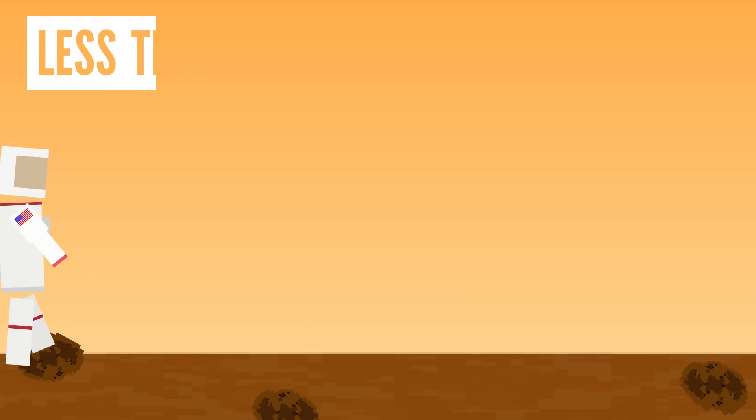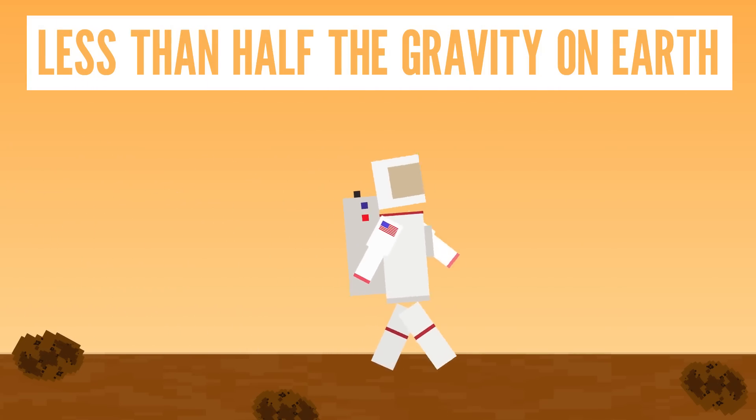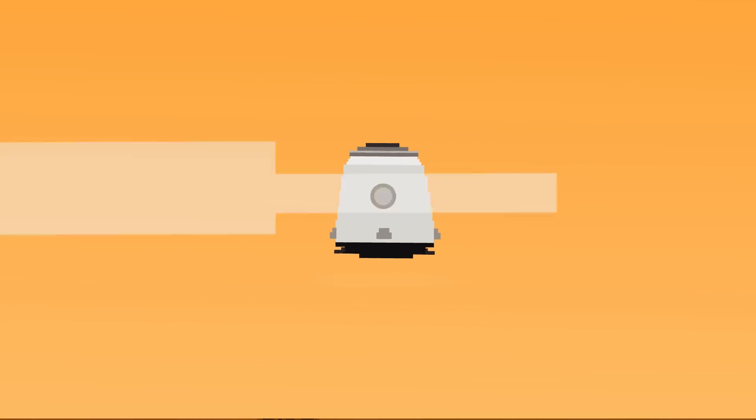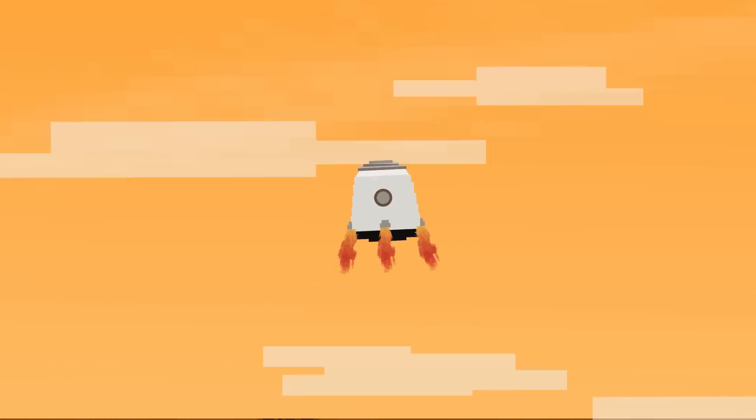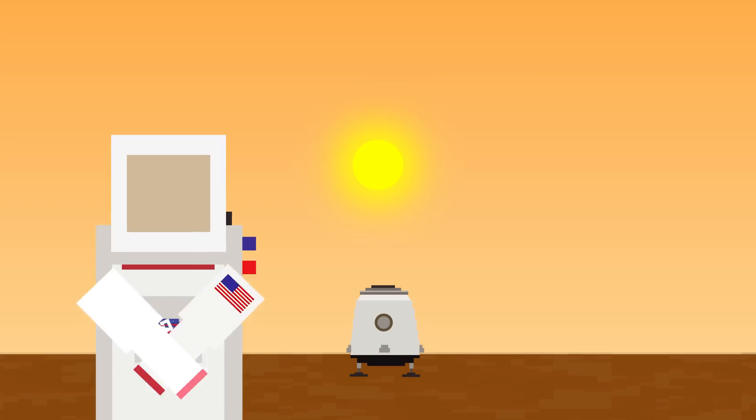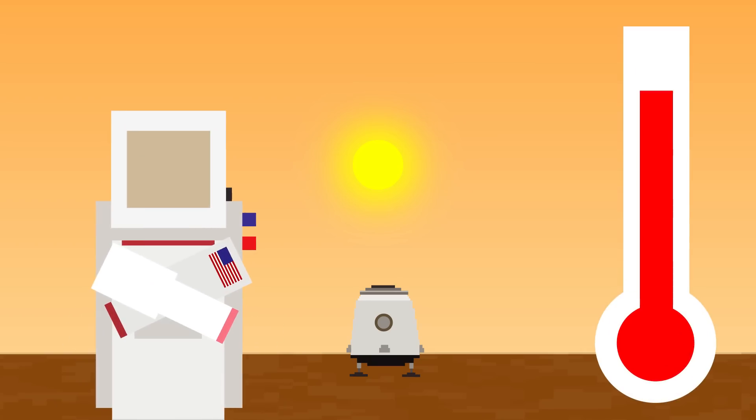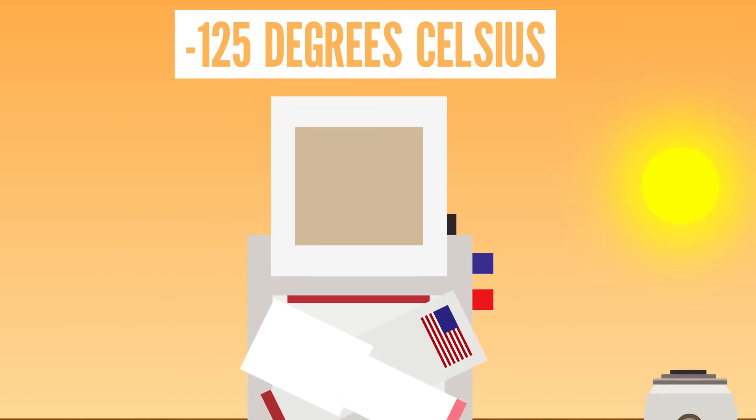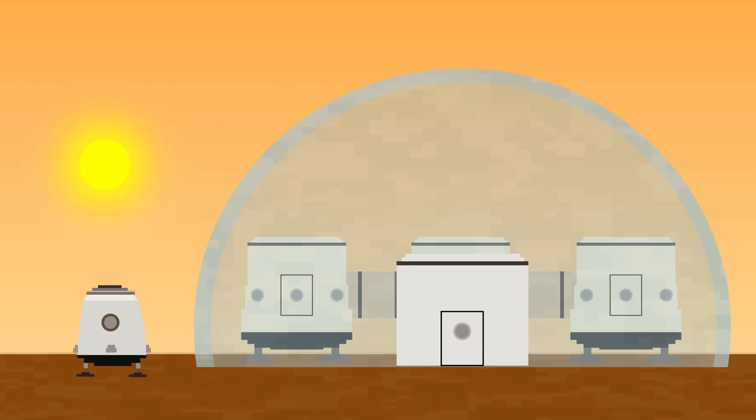Since Mars has less than half the gravity that we have on Earth, we'd need to figure out how to combat physical issues like muscle degeneration and vision problems. Spacecrafts would need to be able to land safely on a planet with hardly any atmosphere to slow them down. Powerful solar storms bombard the surface with high levels of radiation. And it's freezing there, with temperatures dropping to almost negative 125 degrees Celsius. Humans would need some serious protection if they really wanted to live on Mars.